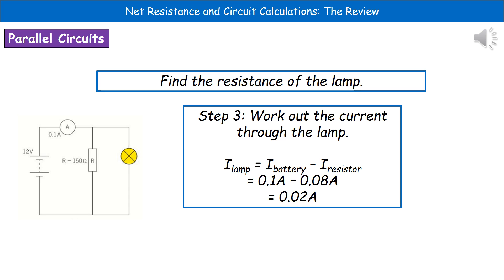Now we know the current through the resistor loop and the current near the battery, so we can find the current through the lamp loop. Since currents in each loop add up to the battery current: 0.1 minus 0.08 amps gives us 0.02 amps as the current through the lamp loop.